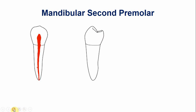Now let's discuss the endodontic anatomy. This is the buccal pulp horn and this is the lingual pulp horn. The pulp horns are quite prominent in the second premolar, especially the lingual pulp horn, which was not prominent in the mandibular first premolar. The buccolingual dimensions of the mandibular second premolar pulp chamber are wide as compared to the mesiodistal dimensions.